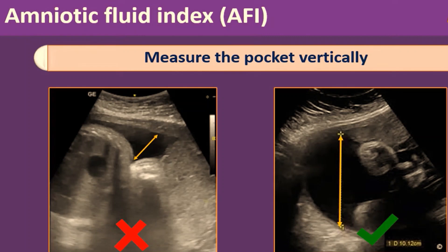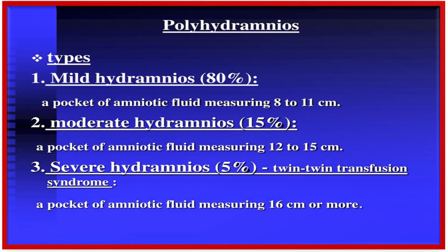After doing appropriate ultrasonographic measurements, we divide polyhydramnios into three main types. Mild hydramnios occurs in 80% of cases, with a pocket of amniotic fluid measuring between 8 to 11 cm. Moderate hydramnios occurs in 15% of cases, with a pocket measuring between 12 to 15 cm. Severe hydramnios occurs in 5% of cases, with a pocket of amniotic fluid measuring 16 cm or more.